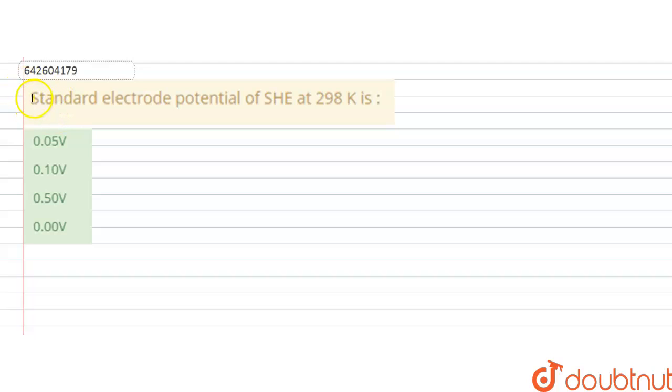Hello students, the question is: standard electrode potential of SHE at 298 Kelvin is? SHE refers to the standard hydrogen electrode.